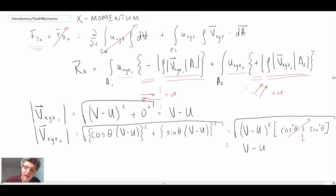So the surface area one is equal to surface area two for our control surfaces. So we can then write A1 equals A2 from continuity.